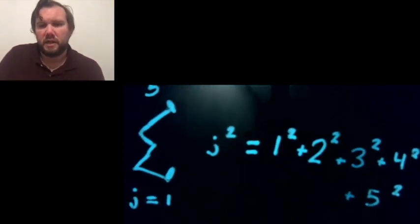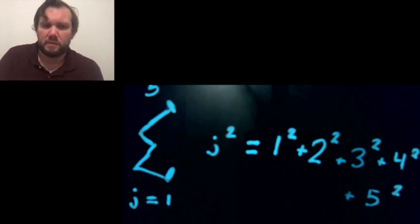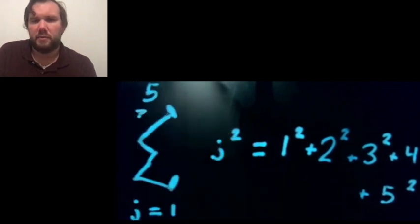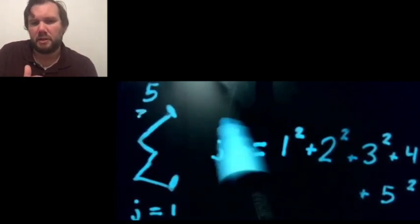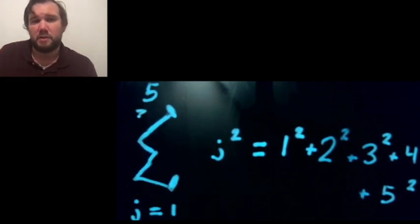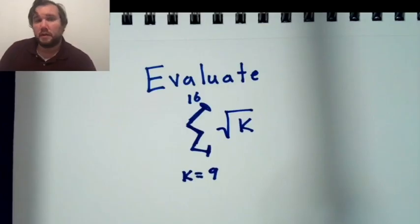I'm just going to do j squared for each value of j from 1, which is my start value, to 5, which is my stop value. And so this is what it would look like if you expanded it out. And the reason that we have this summation notation is to make it so we don't have to write plus, plus, plus, plus all the time. So let's look at another one of these.